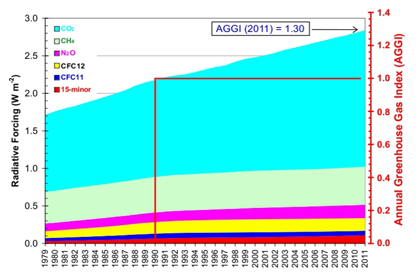Earth absorbs some of the radiant energy received from the Sun, reflects some of it as light, and reflects or radiates the rest back to space as heat. Earth's surface temperature depends on this balance between incoming and outgoing energy. If this energy balance is shifted, Earth's surface becomes warmer or cooler, leading to a variety of changes in global climate. A number of natural and man-made mechanisms can affect the global energy balance and force changes in Earth's climate. Greenhouse gases are one such mechanism — they absorb and emit some of the outgoing energy radiated from Earth's surface, causing that heat to be retained in the lower atmosphere.